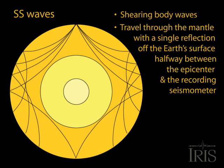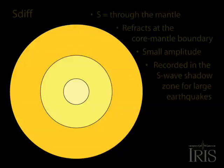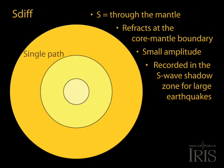Another way that the shearing energy can arrive at recording seismometers in the S wave shadow zone is by diffracting off the mantle core boundary. If the advancing S wave strikes the mantle core boundary at a critical angle, it will travel along the base of the mantle, sending shearing energy back to the surface to seismometers within the shadow zone. These ray paths are labeled Sdiff.